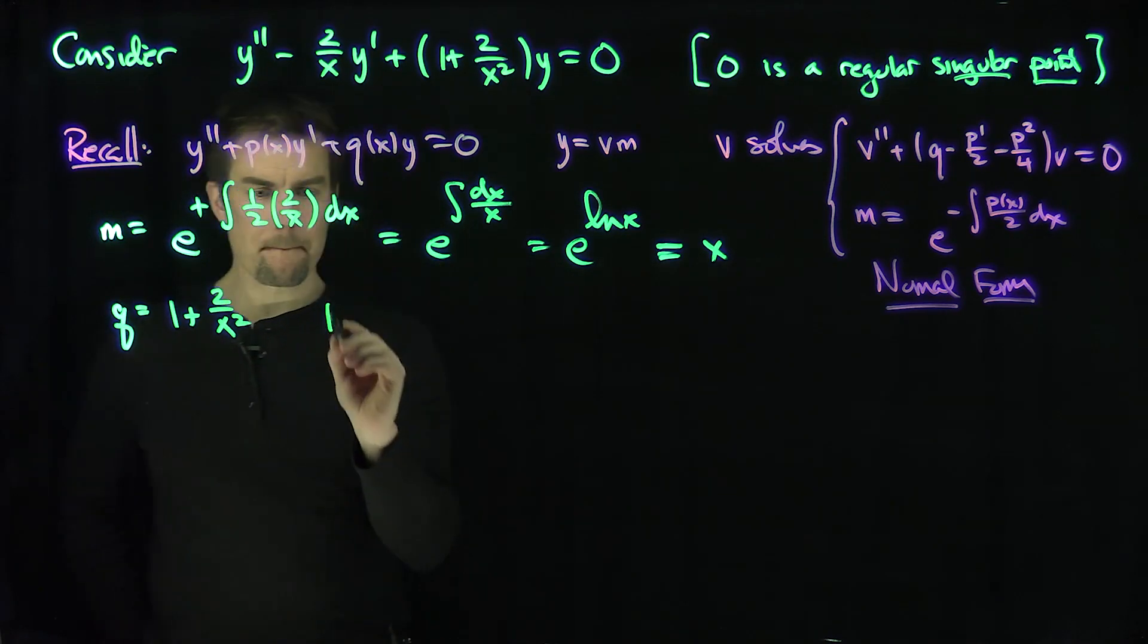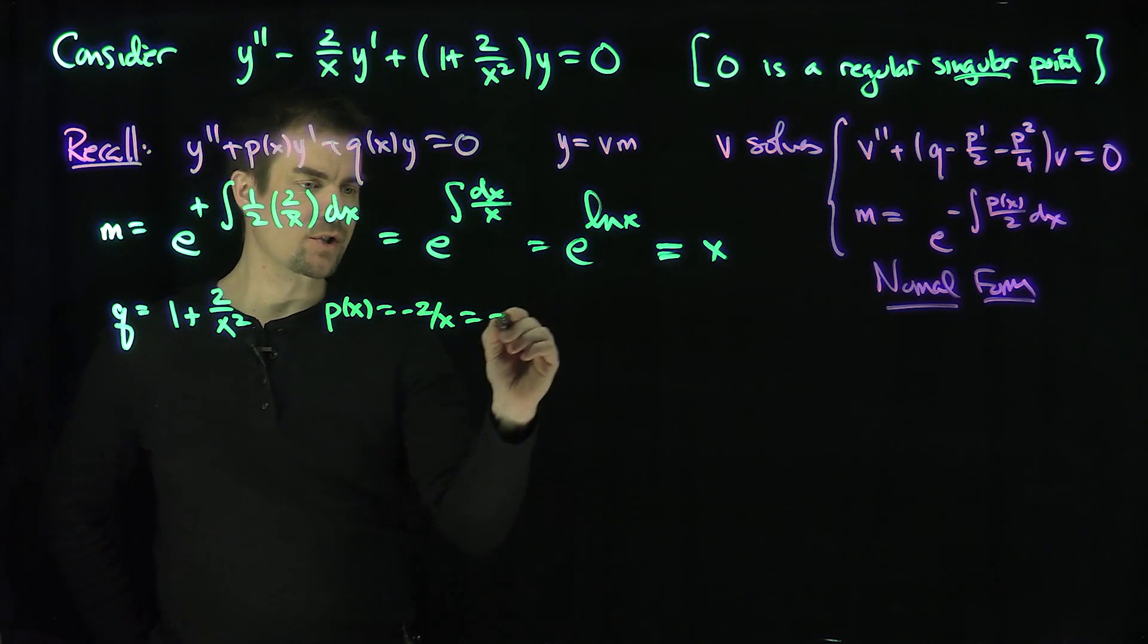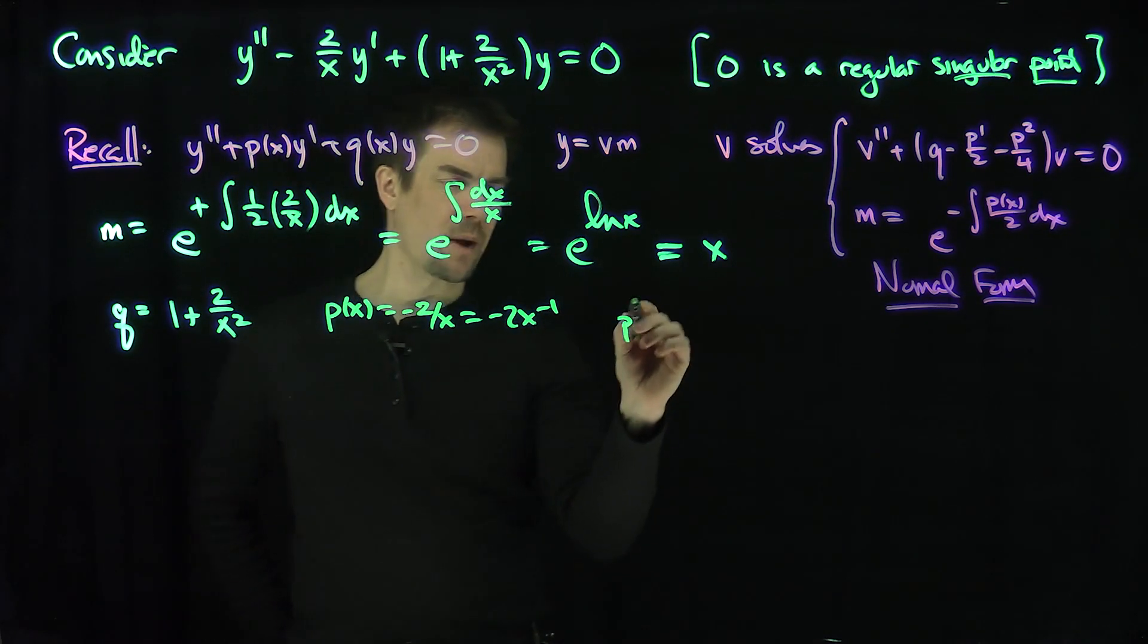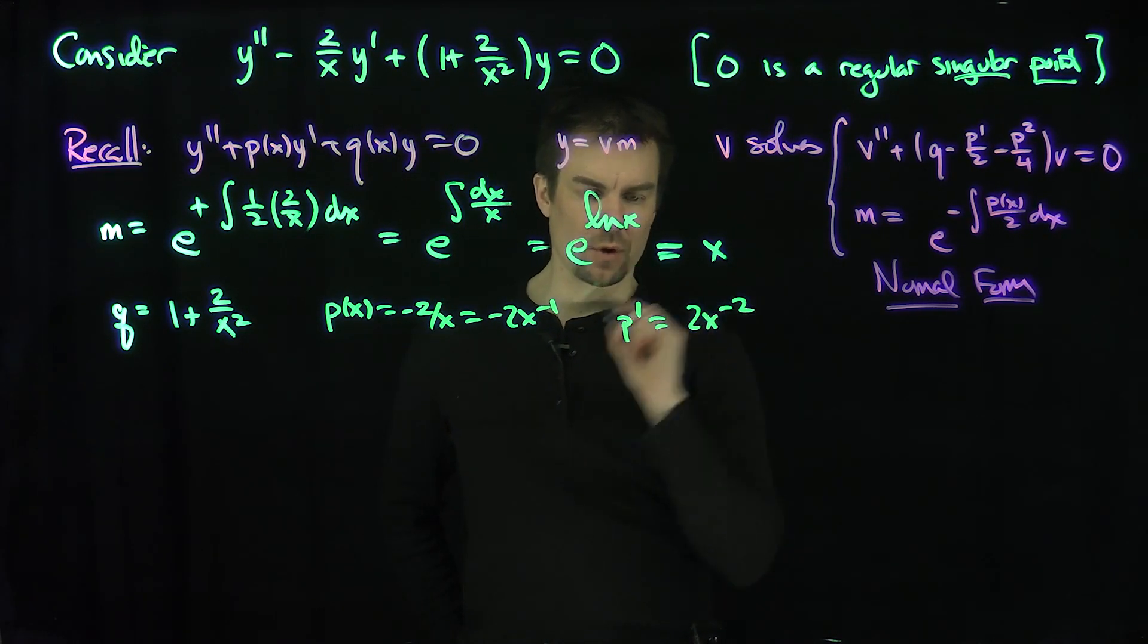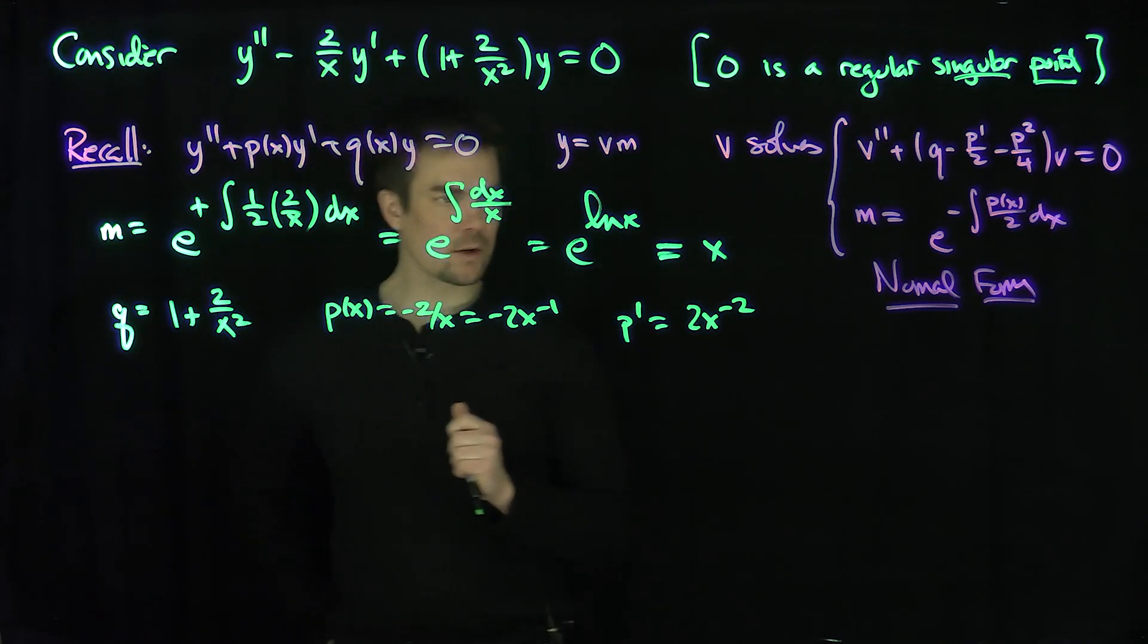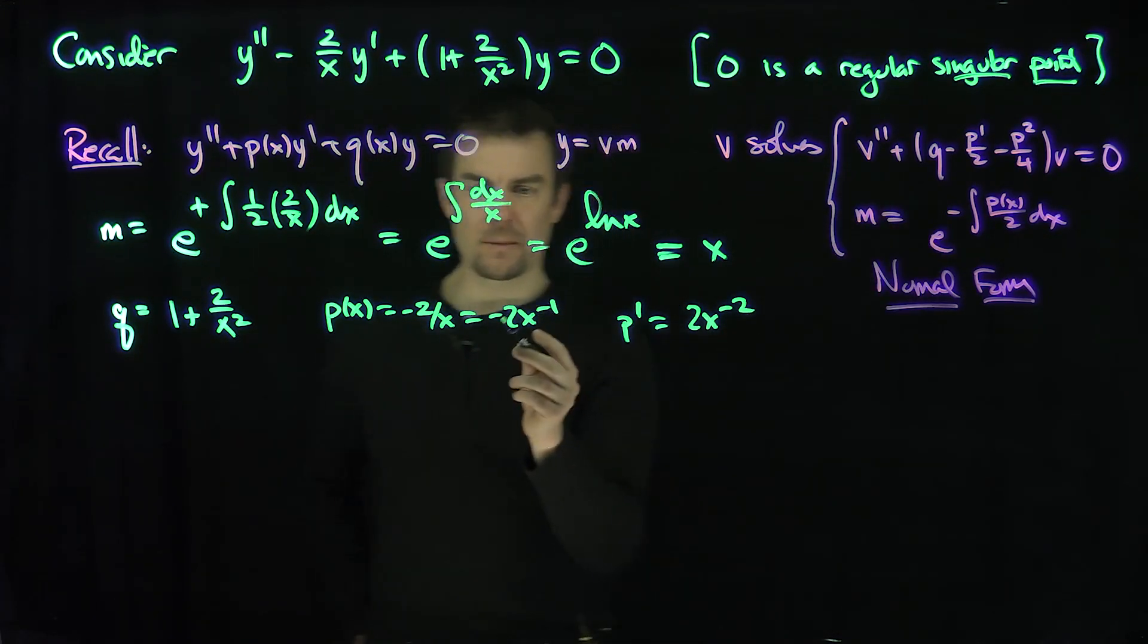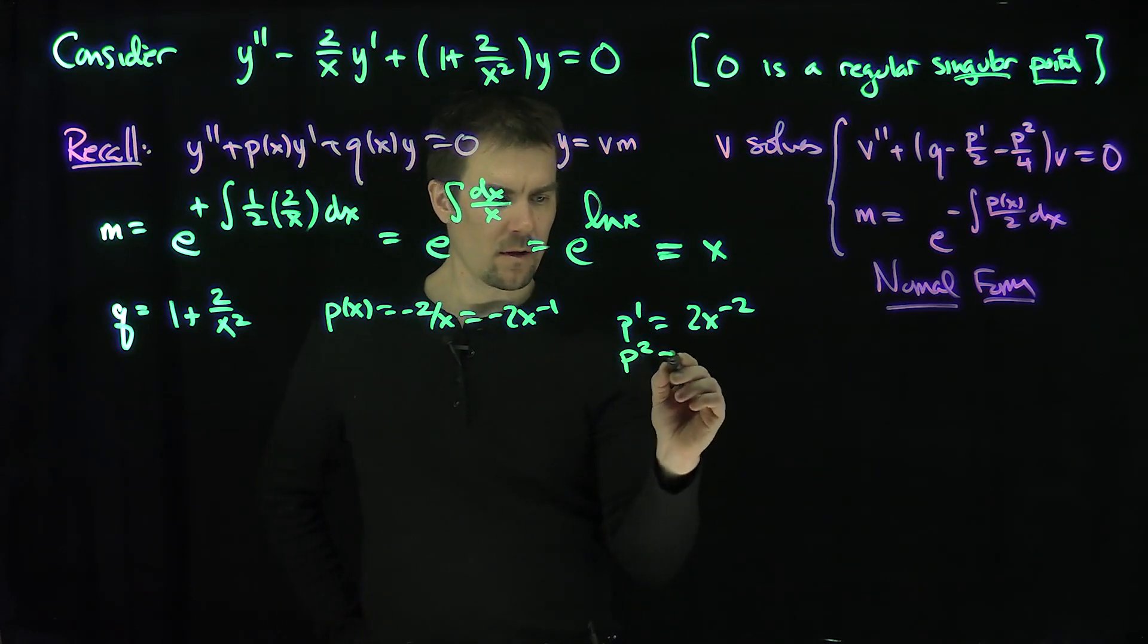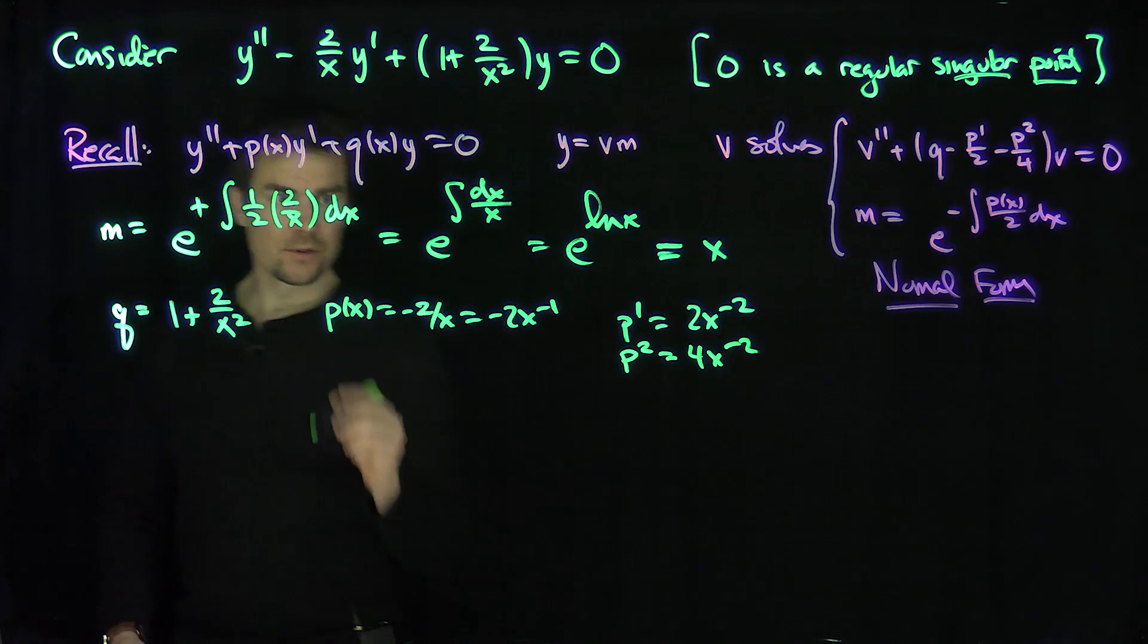What's my p'? My p is -2/x, which is -2x^(-1). So p' is 2x^(-2). And what's p²? p² is 4x^(-2).